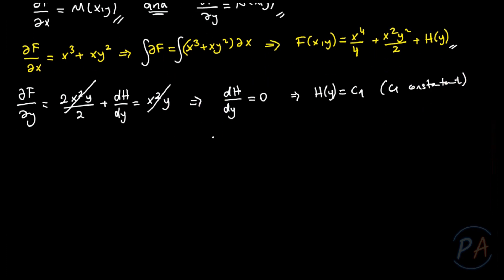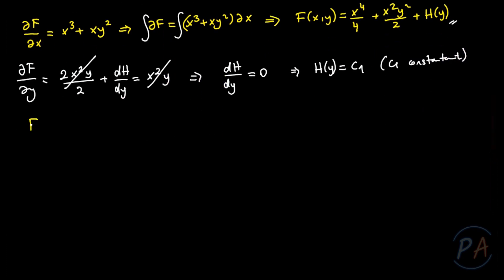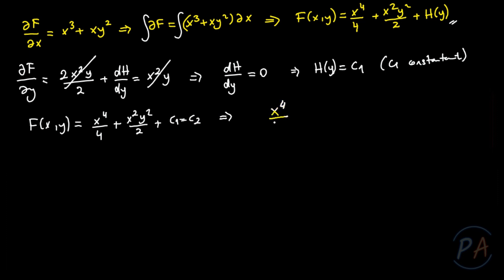Now I can write the general solution: f(x,y) = x⁴/4 + x²y²/2 + c₁ = c₂. This simplifies to x⁴/4 + x²y²/2 = c, where c = c₂ − c₁ is a constant.